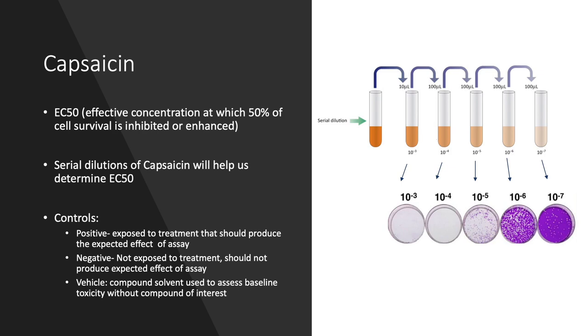Finally, our vehicle control will be DMSO. This is the solvent in which capsaicin is dissolved and when compared to our negative controls, we will be able to assess the baseline toxicity that our solvent has on our cells.